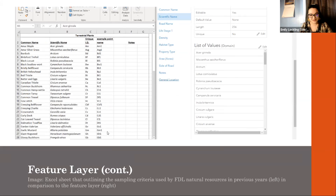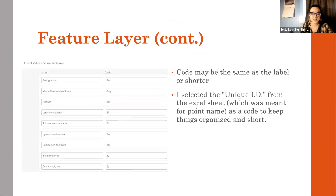I was able to make drop-down menus for a lot of the different features, and you can see an example over on the right. In the feature layers, when you create the drop-down menu, you put in the label — which is what pops up when selecting from the menu — and you create an individual code that is unique to that specific species or feature. I used the unique ID from the Excel sheet to keep it the most consistent.